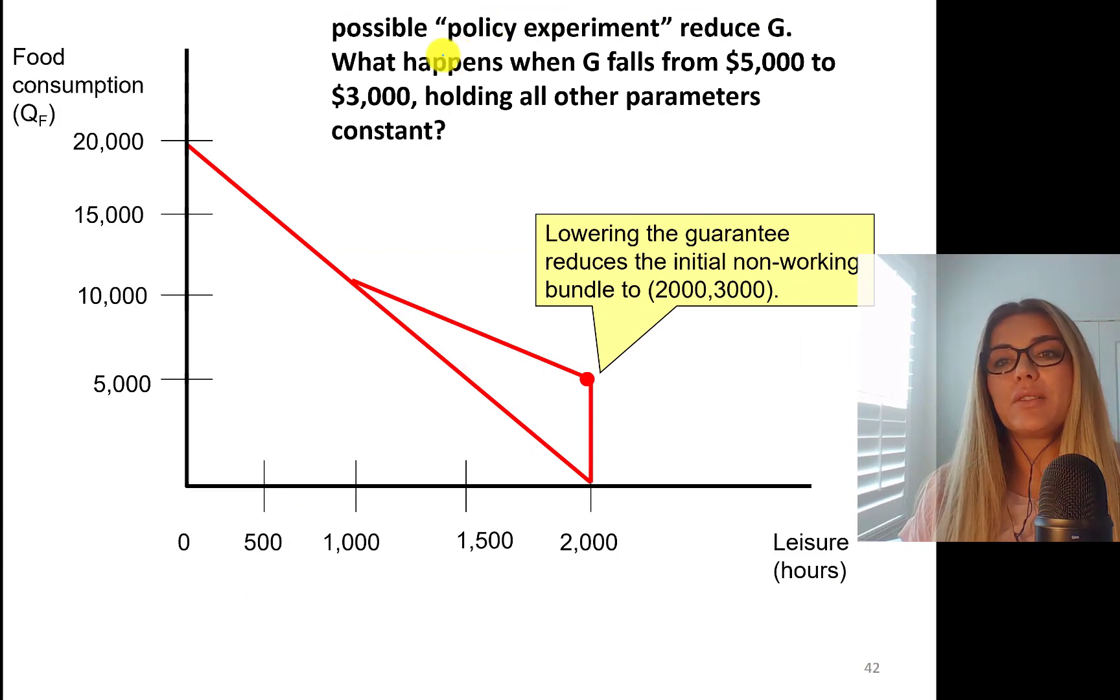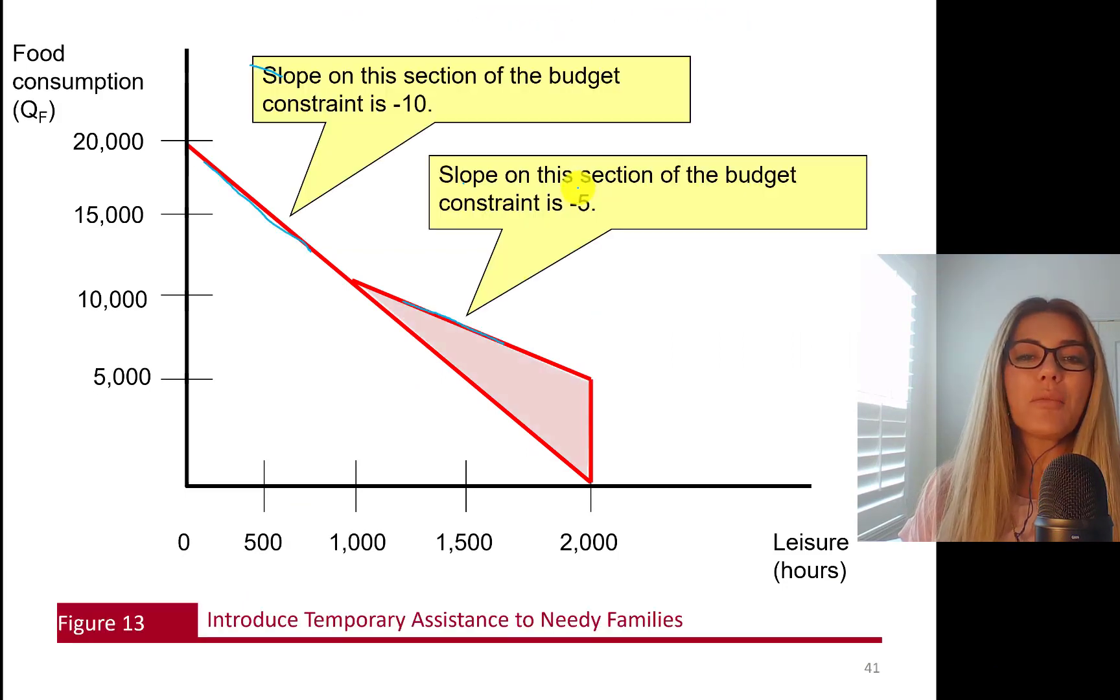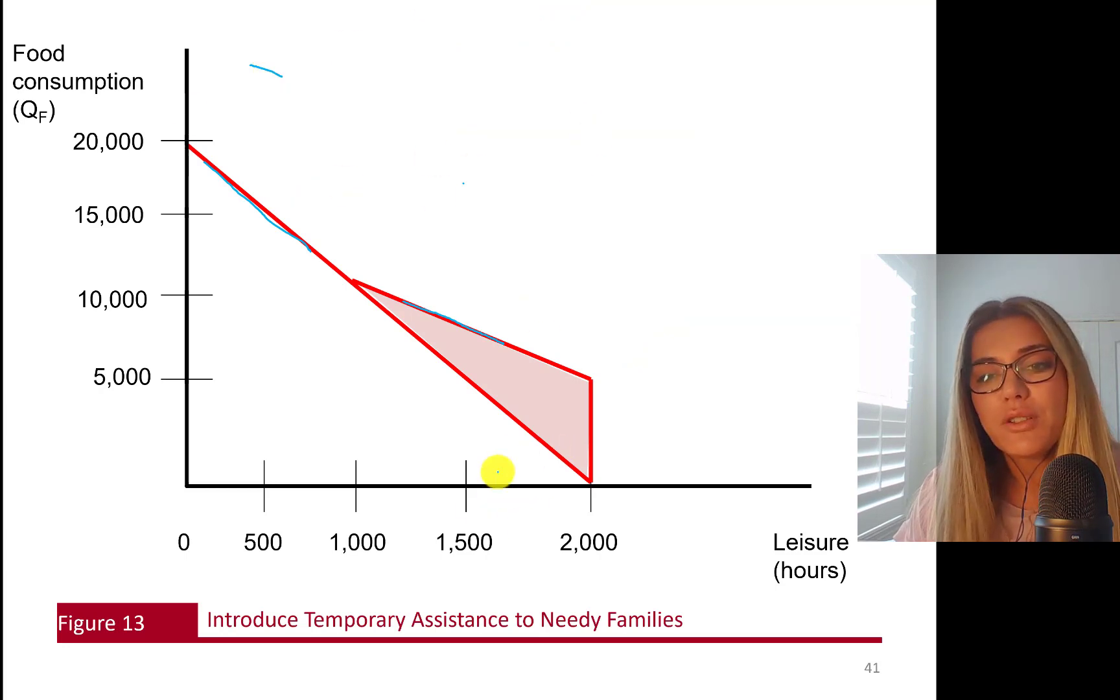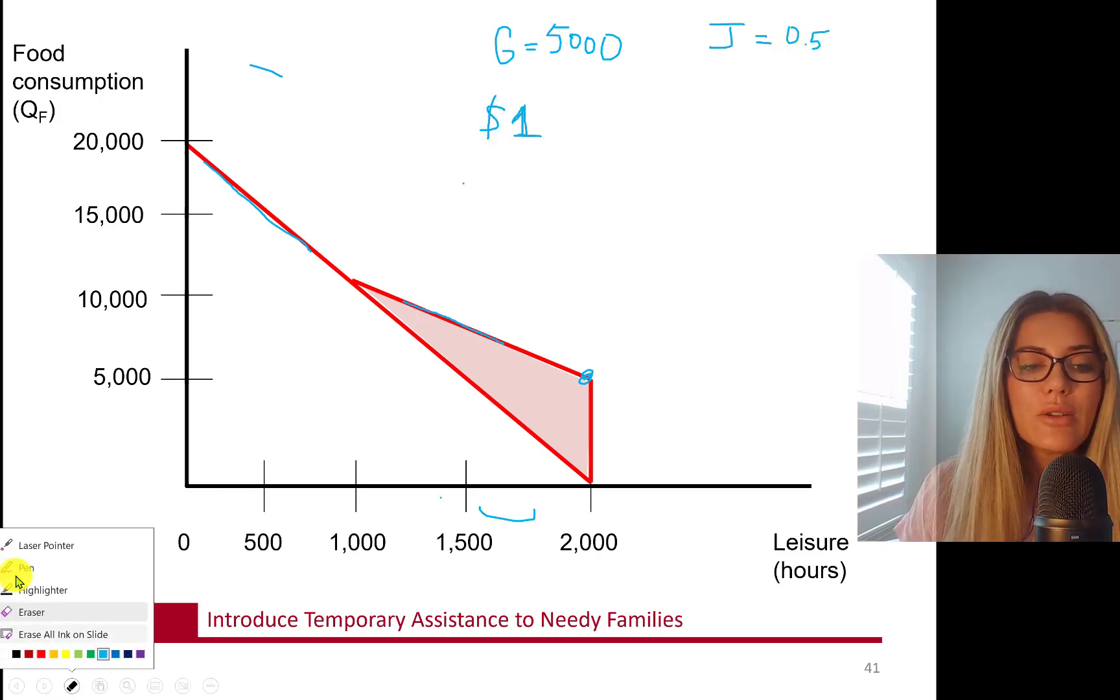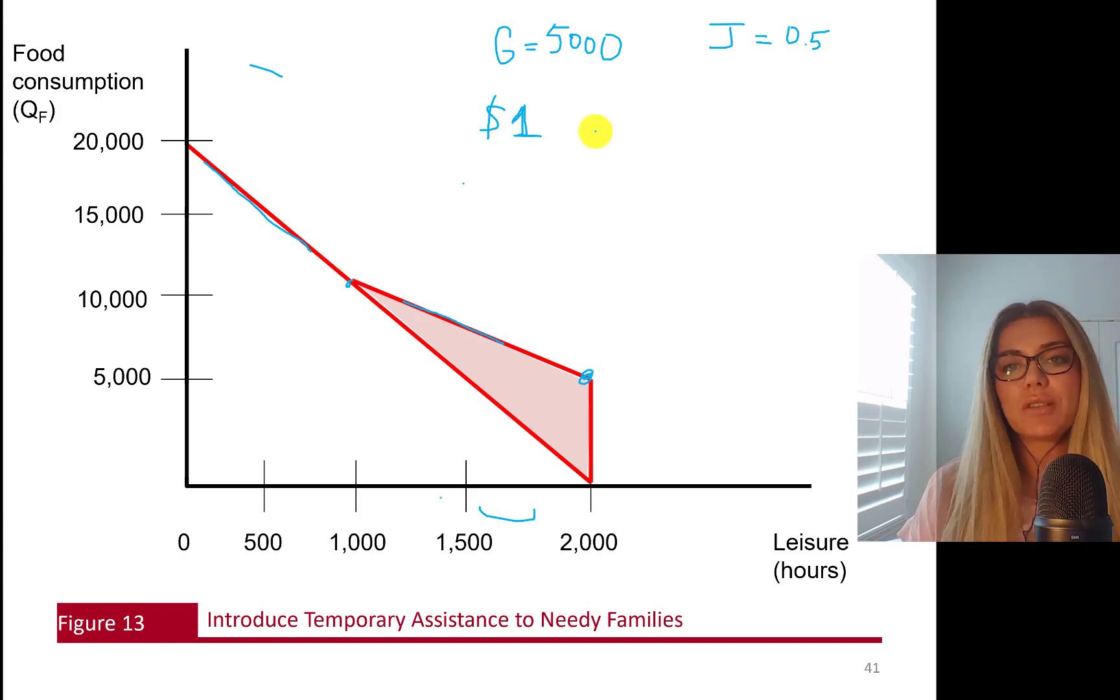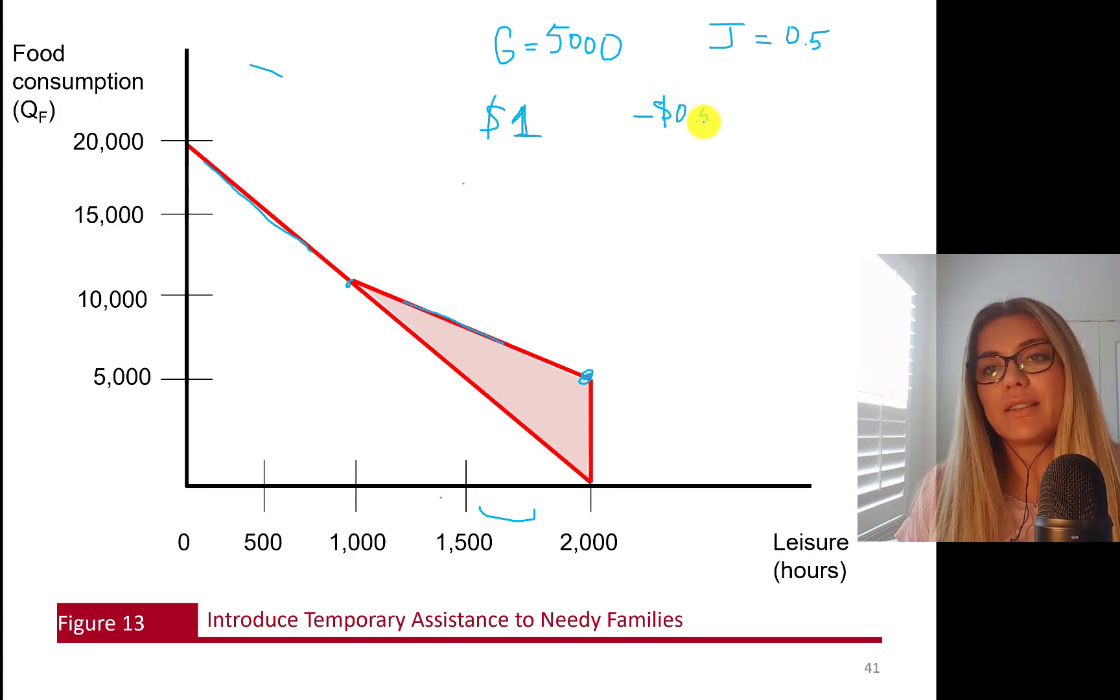So possible policy experiment to reduce G. But before we get to that, I'm going to show you a couple of things how we get this budget line. So $5,000. So you're getting G equals $5,000. And benefit reduction rate is J, 50%, 0.5. So let's learn how to calculate these kink points in this new budget line. If I make $1 in the market earning money, I'm going to lose 50 cents from my benefit guarantee.